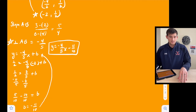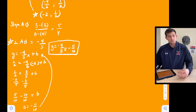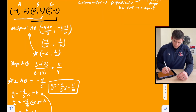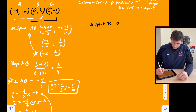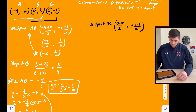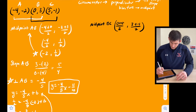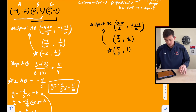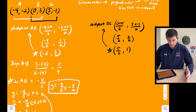Now we need a second perpendicular bisector, so let's use points B and C. The midpoint of BC: x-coordinates 0 plus 5 over 2, y-coordinates 3 plus negative 1 over 2. That gives us 5/2 and 2/2, so the midpoint of BC is 5/2, 1.